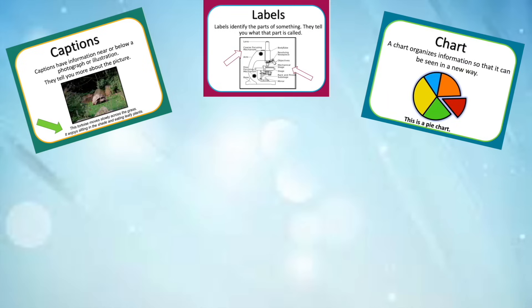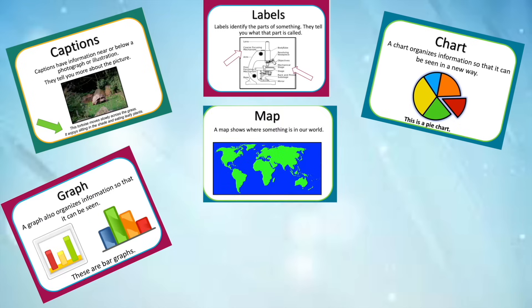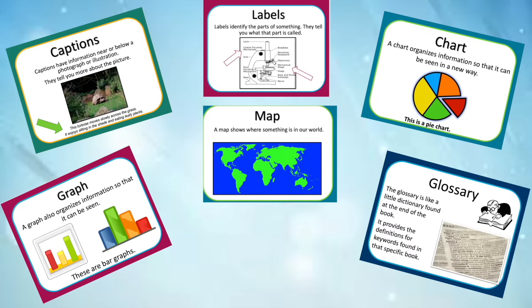Charts organize information so it can be seen in a new way. Graphs also organize information so that it can be seen clearly. Maps show where something is in our world.